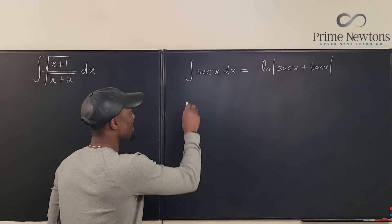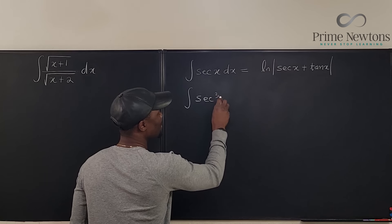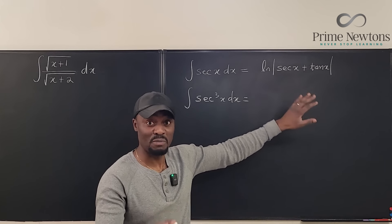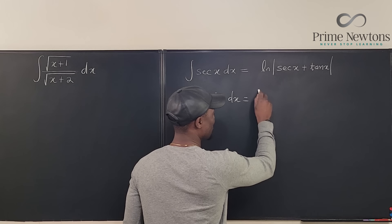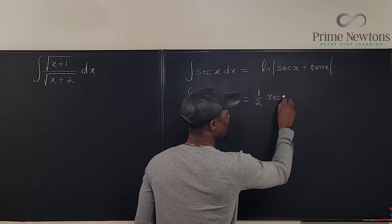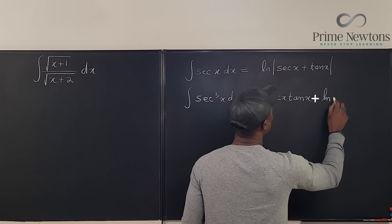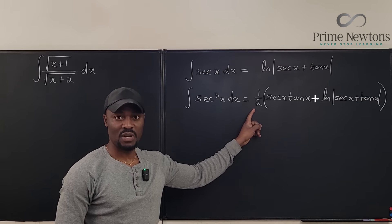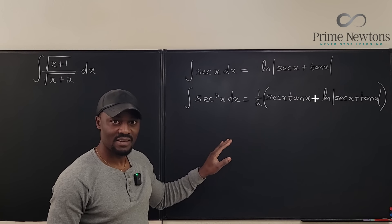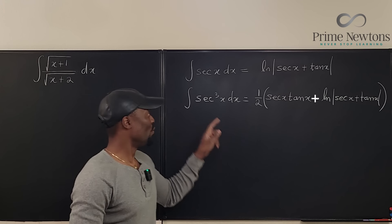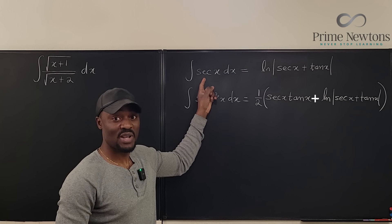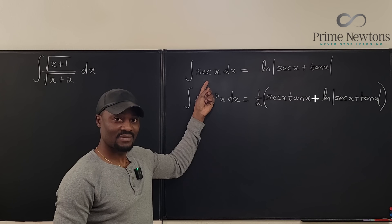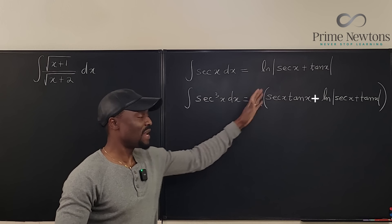Second, you must know what the integral of secant cubed x dx is. The answer is one-half of secant x tan x plus one-half times the natural log of the absolute value of secant x plus tan x. Have these two memorized, or be ready to go through integration by parts, u-substitution, and rationalization.